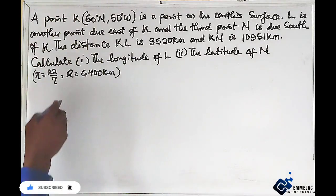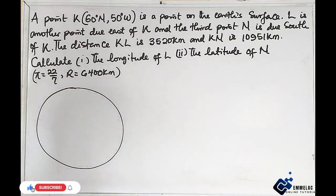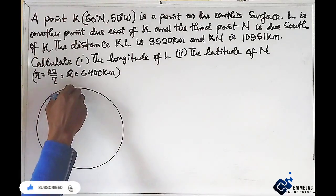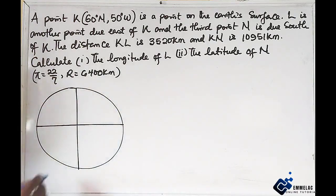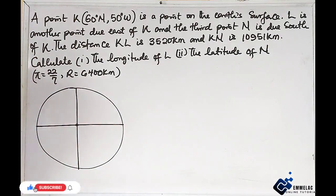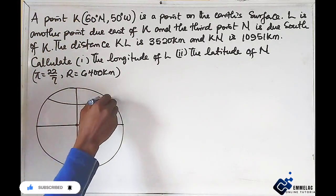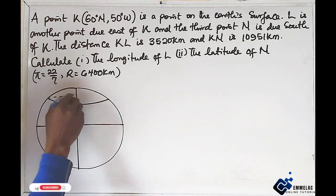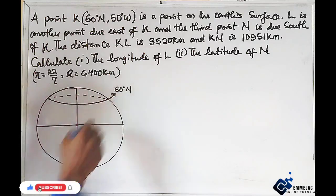Let us draw the Earth's surface as the question demands. These are the two lines that divide the Earth equally, north and south, east and west. Our K is at latitude 60. Let us assume this is it. And this is our latitude 60 degree north.